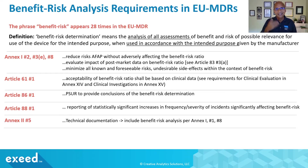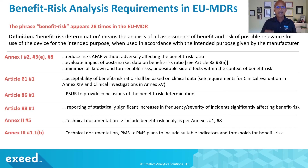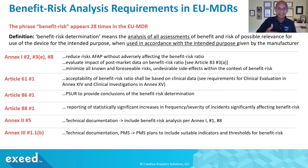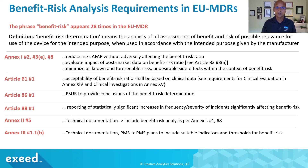Annex 2 technical documentation must include the benefit-risk analysis per all these annexes. Annex 3 technical documentation for post-market surveillance requires PMS plans to include suitable indicators and thresholds for benefit-risk. That means you need to plan ahead — if it's a new product, you will likely need more stringent requirements and more frequent monitoring to gather the information you need, and your PMS plan should reflect that approach, which may differ for a legacy product.